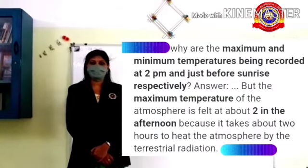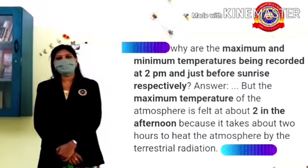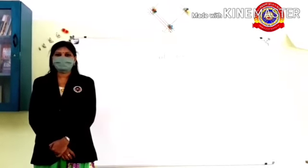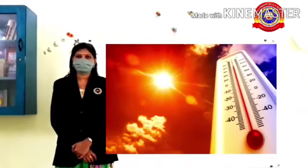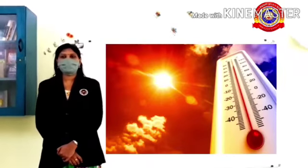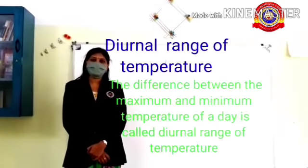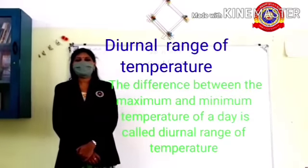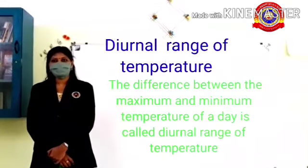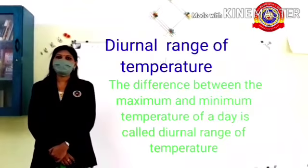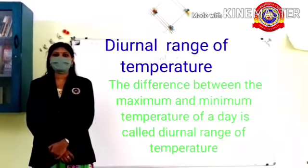It takes about 2 hours to heat the atmosphere. The instrument used to measure temperature is the thermometer. Thermometer is the instrument used for measuring the maximum and minimum temperature in a day. Next: diurnal range of temperature. The difference between the maximum and the minimum temperature of a day is called the diurnal range of temperature.